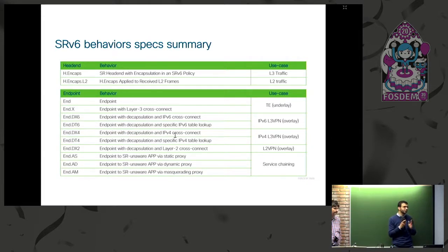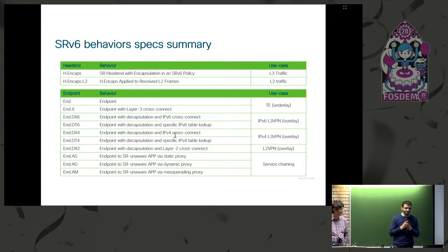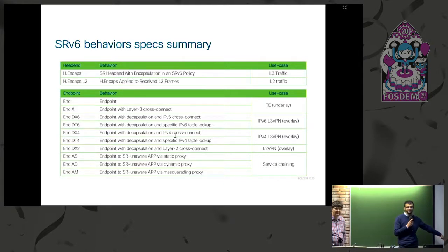Q: Was there discussion that Cisco proposed non-standard SRV6 extensions that Linux has not yet implemented — does this work with standard tags? A: I'm not sure exactly which part you're referring to, but from the slides shown here, all of these behaviors are supported in the Linux kernel. The proxy behaviors are currently implemented as a Linux kernel module.